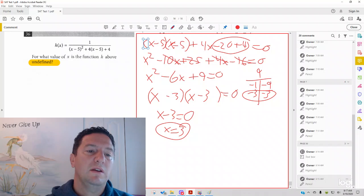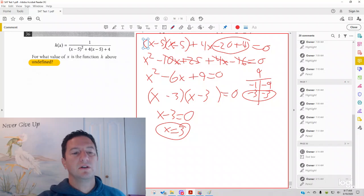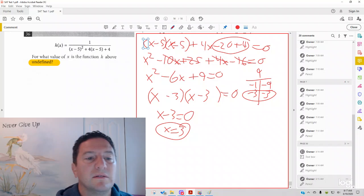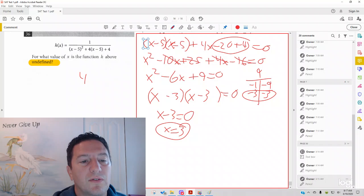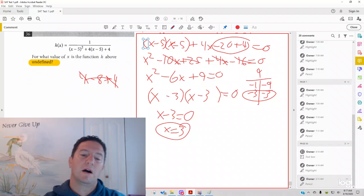Don't believe me? If you plug it back in, and I'm just going to do this out loud instead of writing it down. 3 minus 5 is negative 2. Quantity squared is 4. And then 3 minus 5 is negative 2. Negative 2 times 4 is negative 8. And then you get plus 4 at the end. And you can see that you wind up with 4 and 4 is 8. Minus 8 will give you 0 in the bottom.